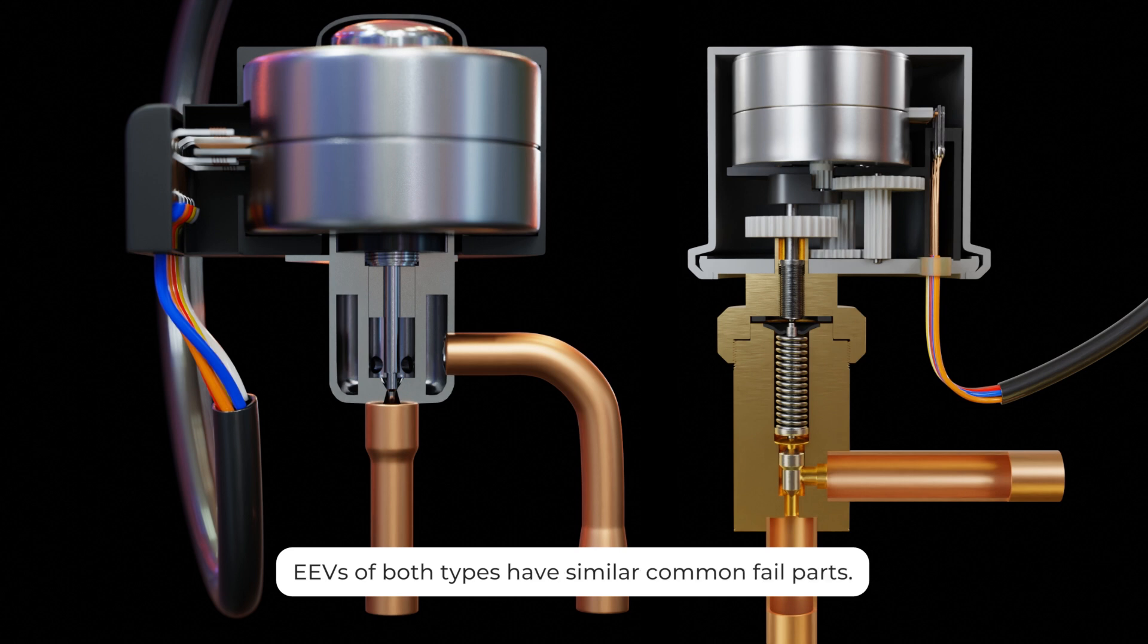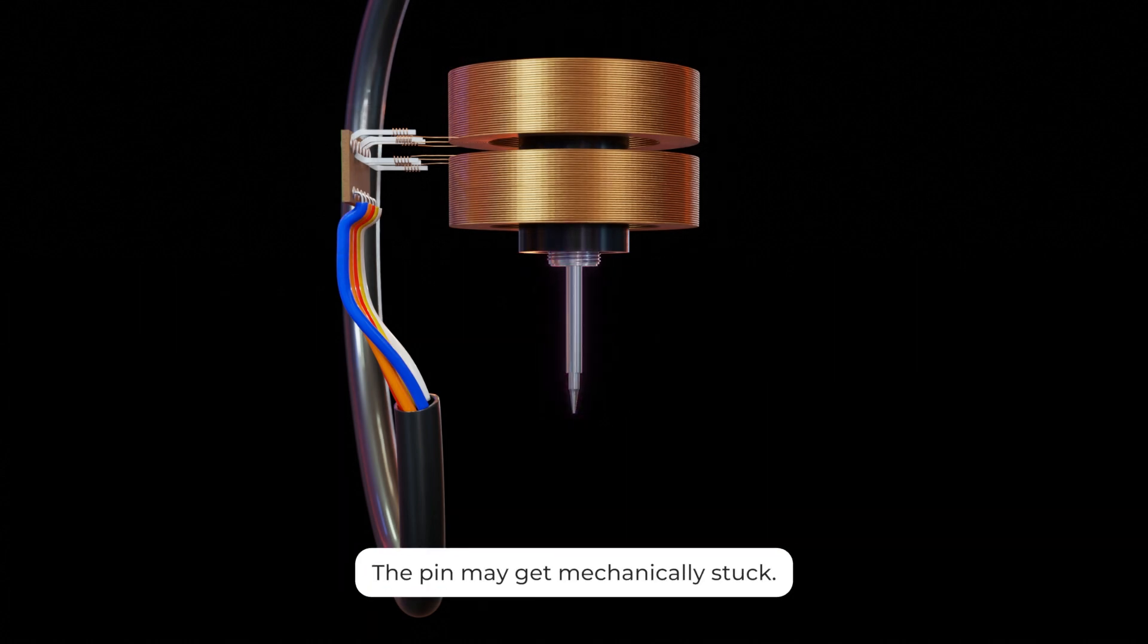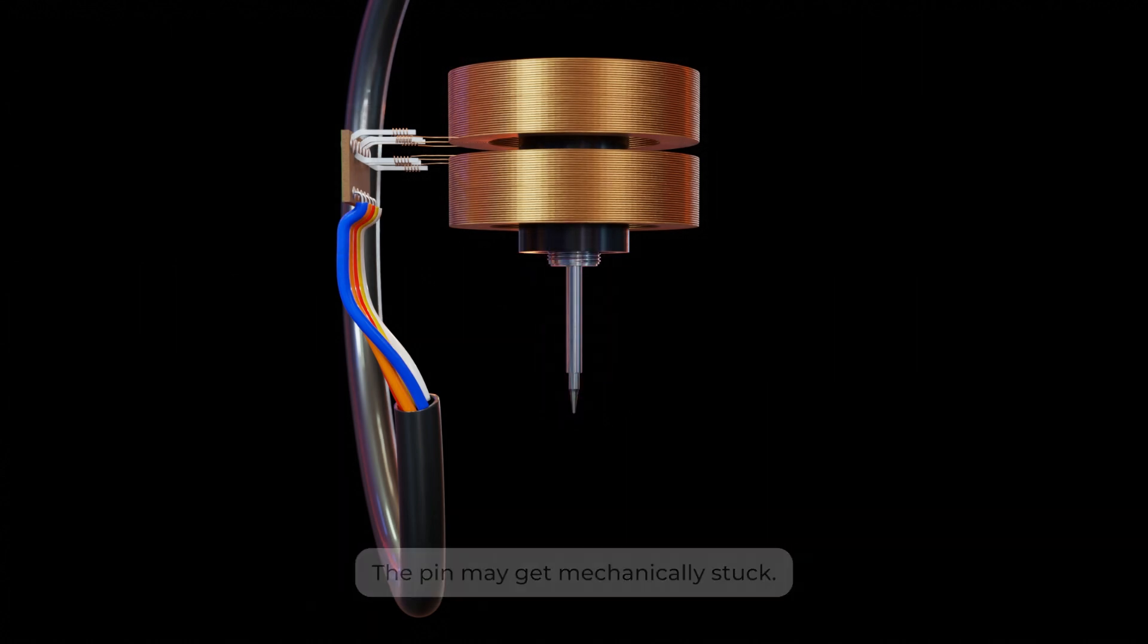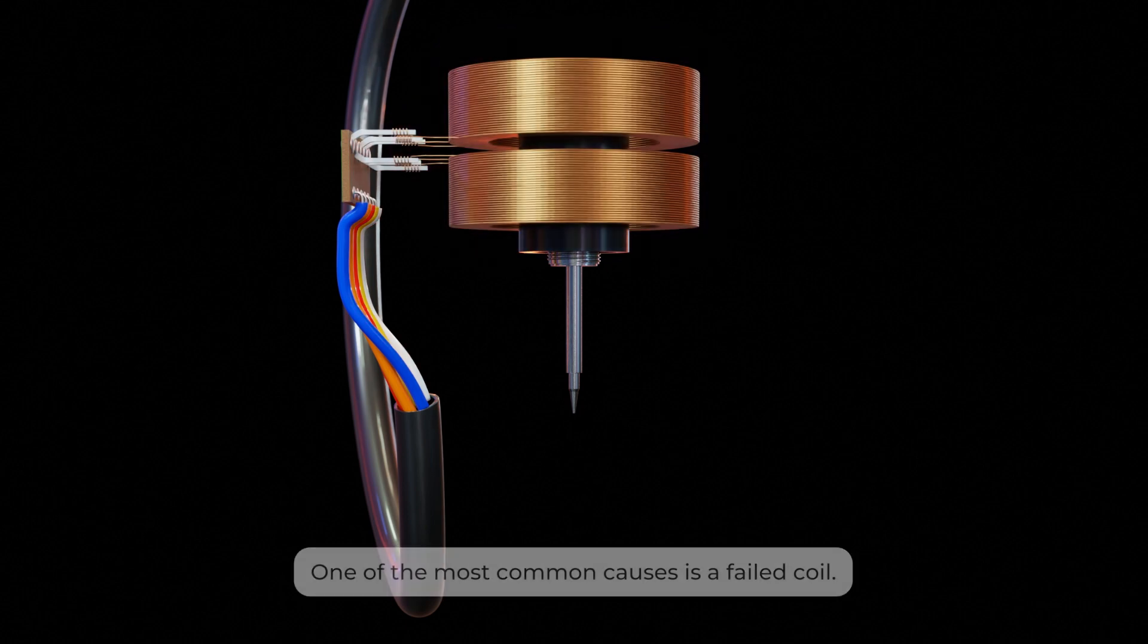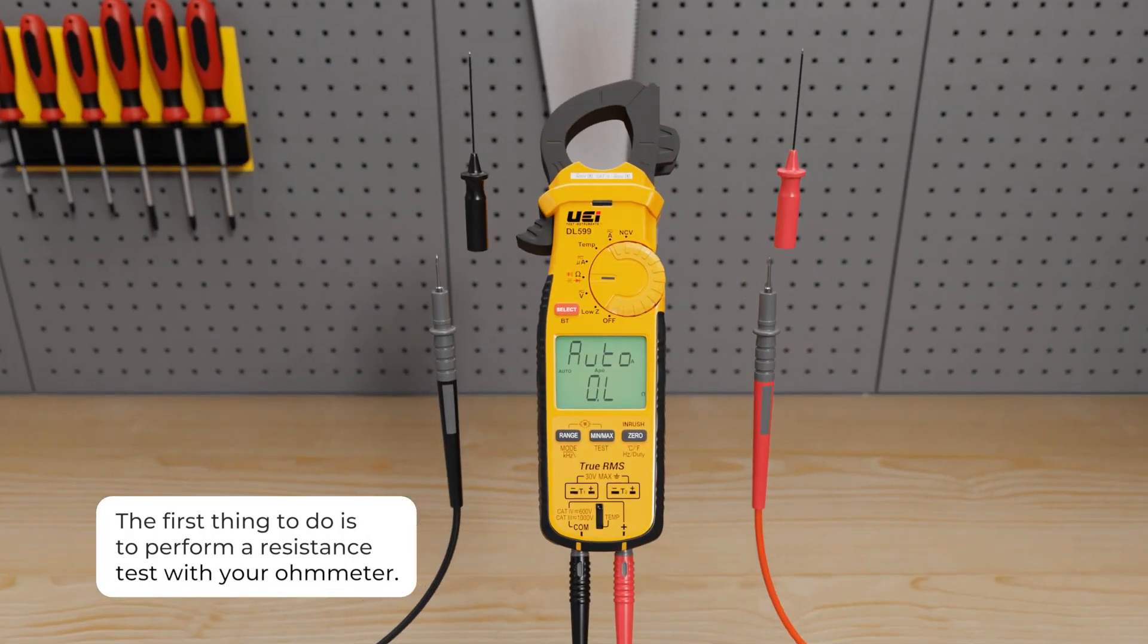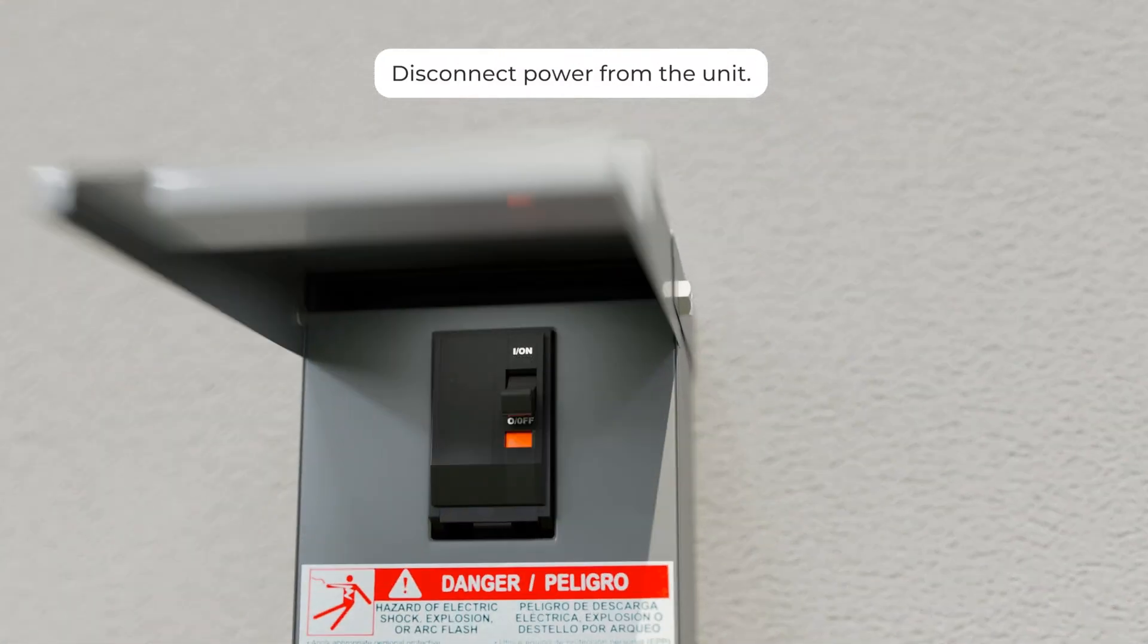EEVs of both types have similar common fail points. As with mechanical metering devices like TXVs, the pin may get mechanically stuck. One of the most common failures is a failed coil. The first thing to do is to perform a resistance test with your ohmmeter. But first make sure you disconnect power from the unit.